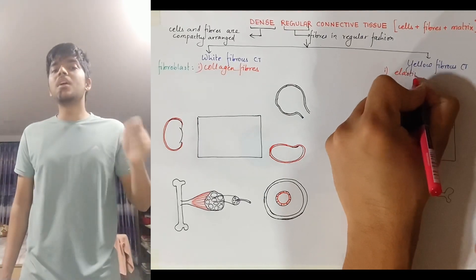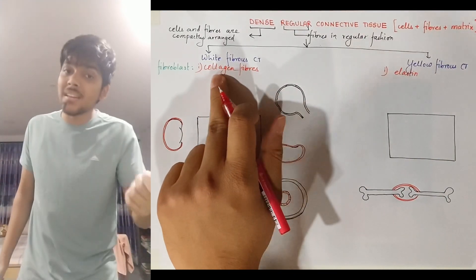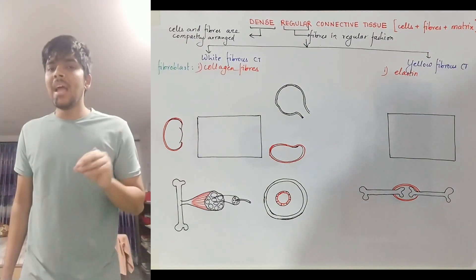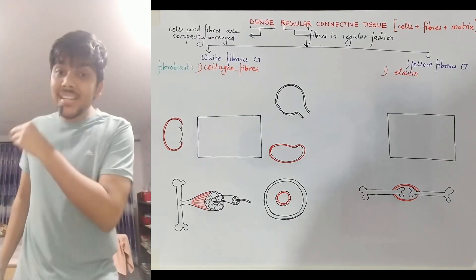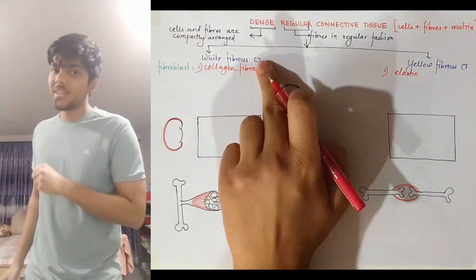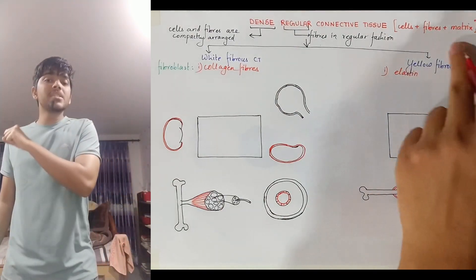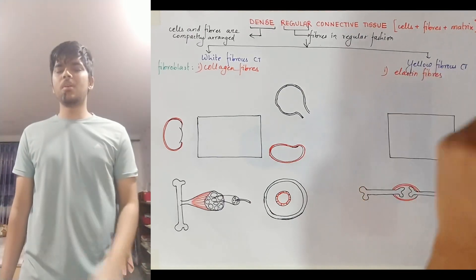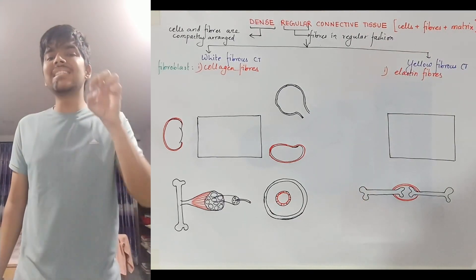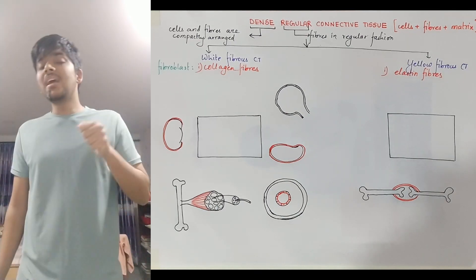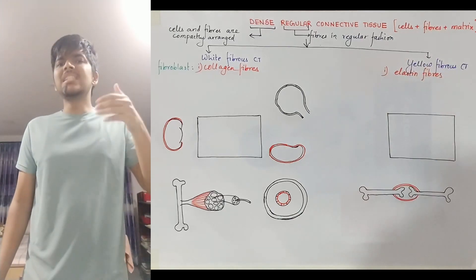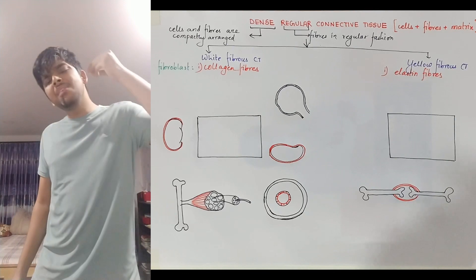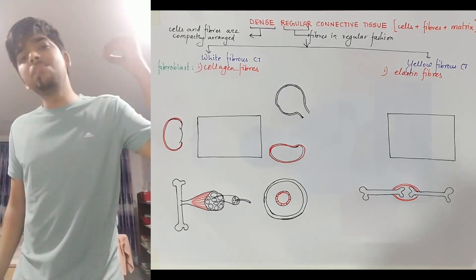It is called white fibrous connective tissue because collagen fibers are made up of the protein collagen, which is white in color, imparting a white color to the tissue. Similarly, in yellow fibrous connective tissue, the fibroblasts secrete elastic fibers. Elastic fibers contain the protein elastin, which is yellow in color, so it imparts yellow color — that's why it's named yellow fibrous connective tissue.